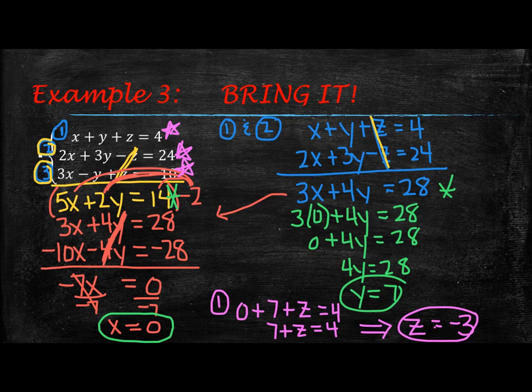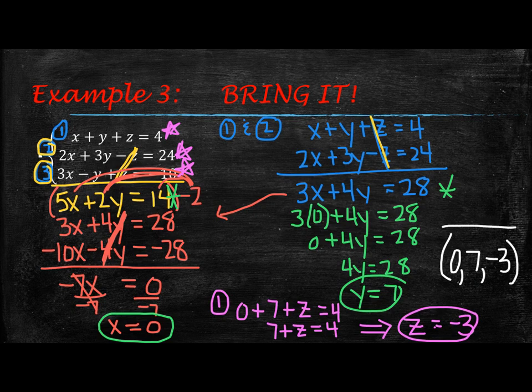So there are my three solutions. My final answers would be my x value of 0, my y value of 7, and my z value of negative 3. This is the hardest kind of example that you're going to get. You want to take two equations, get them down to two variables, then two different sets of equations down to two variables. Then use elimination on those equations, and just go from there.